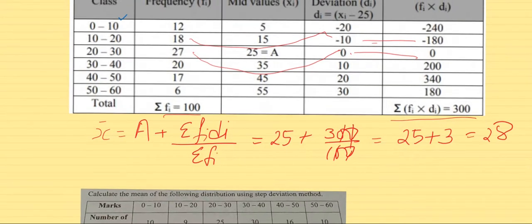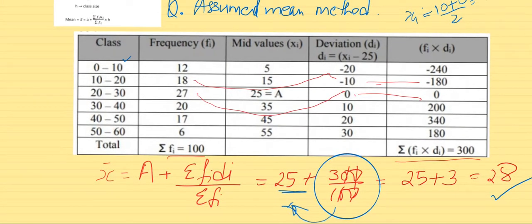Now one important thing here. When you calculate, you have to keep in mind this whole part should be calculated individually. Don't make the mistake of taking LCM. Calculate this, whatever answer comes in point or decimal, add or subtract that with A. That will give you very precise answers. So this was all about assumed mean method.